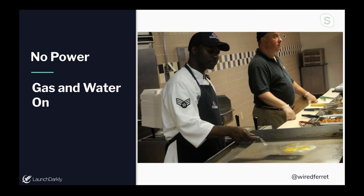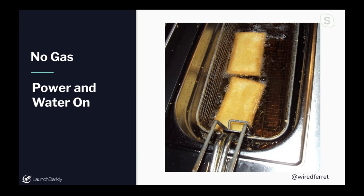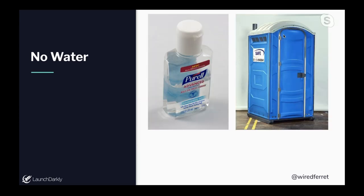They have different ways of operating depending on what's broken. If there's no power but they still have gas and water, they use the cooktops — you still get your hash browns, but not waffles, since those need waffle makers. You might need cash, but you still get fed. If there's no gas but power and water are on, they can use the fryer and make waffles, but nothing on the cooktop since that's gas-fired. If there's no water — the hardest scenario — they can still operate using sanitization procedures, paper plates, and alternative food safety management.